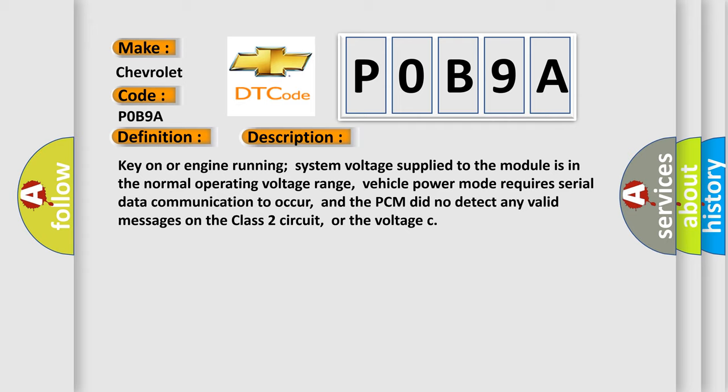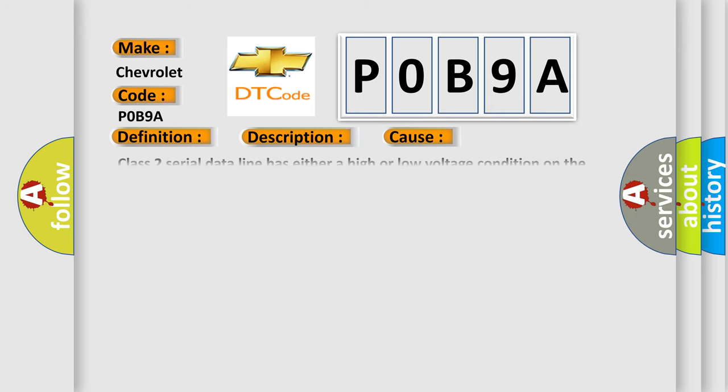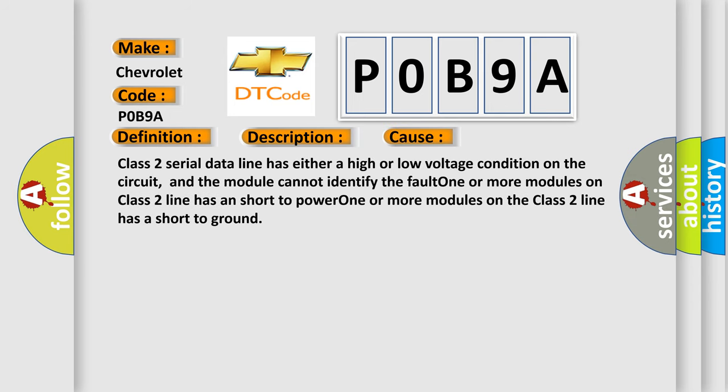This diagnostic error occurs most often in these cases: Class 2 serial data line has either a high or low voltage condition on the circuit, and the module cannot identify the fault. One or more modules on Class 2 line has a short to power. One or more modules on the Class 2 line has a short to ground.